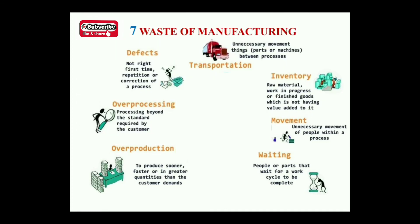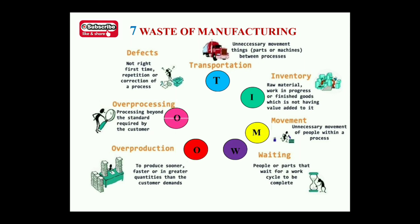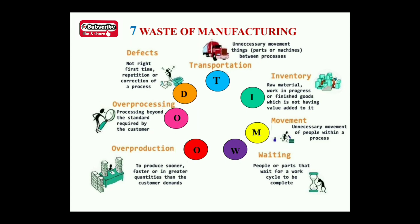In summary, the seven wastes are: Transportation, Inventory, Motion, Waiting, Overproduction, Over-processing, and Defects. A simple way to remember them is the acronym TIMWOOD - T for Transportation, I for Inventory, M for Motion, W for Waiting, O for Overproduction, O for Over-processing, and D for Defects. So if you want to say the seven wastes of manufacturing in a single word, that word is TIMWOOD. I hope this helps you understand the seven wastes present in the manufacturing system.